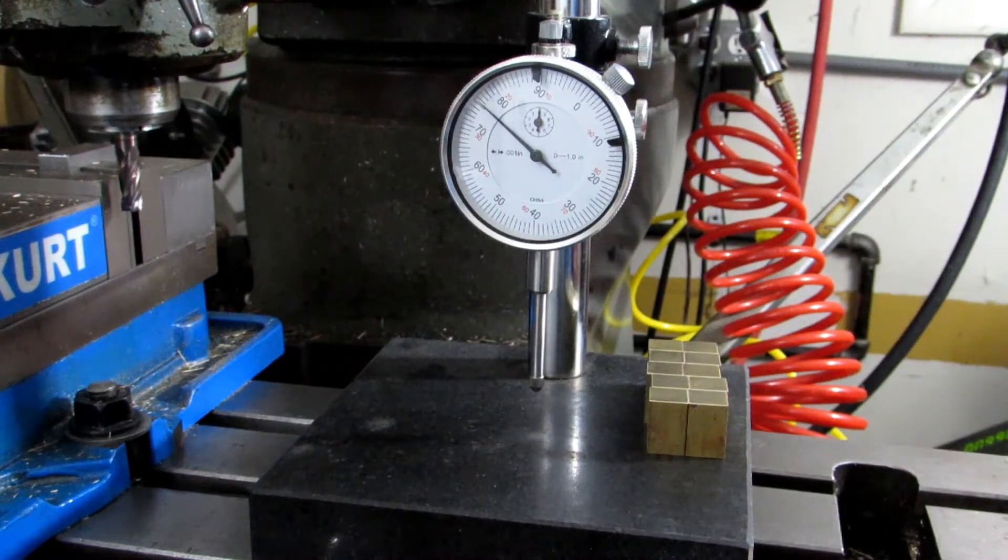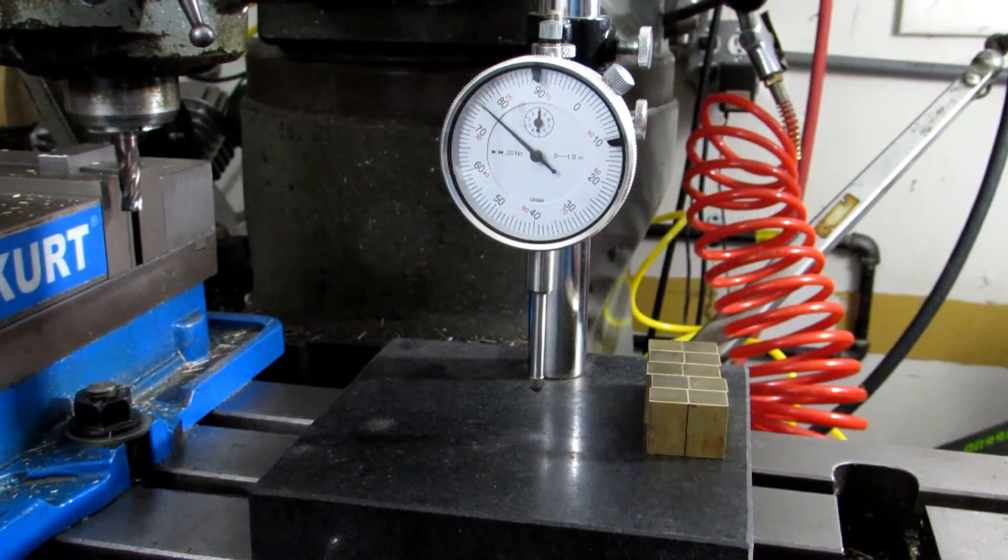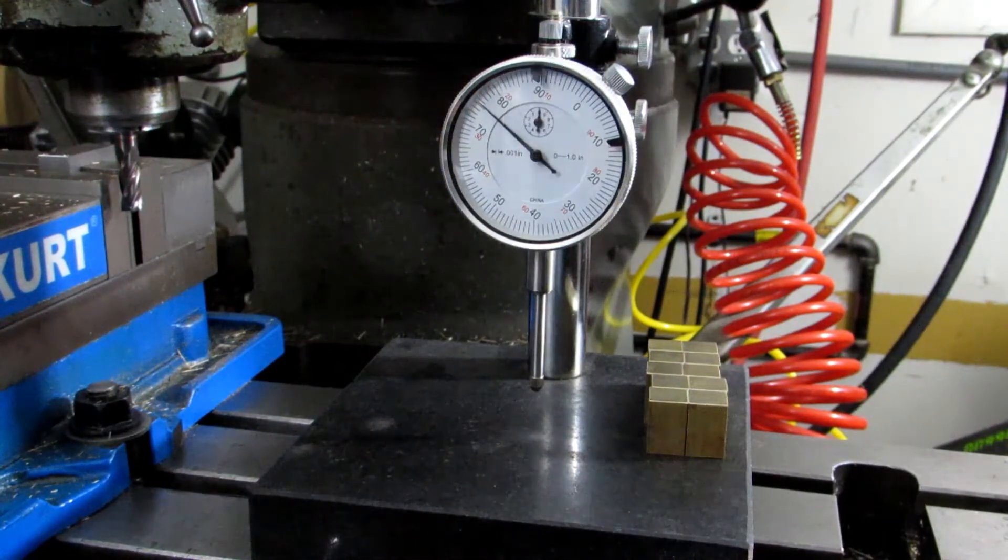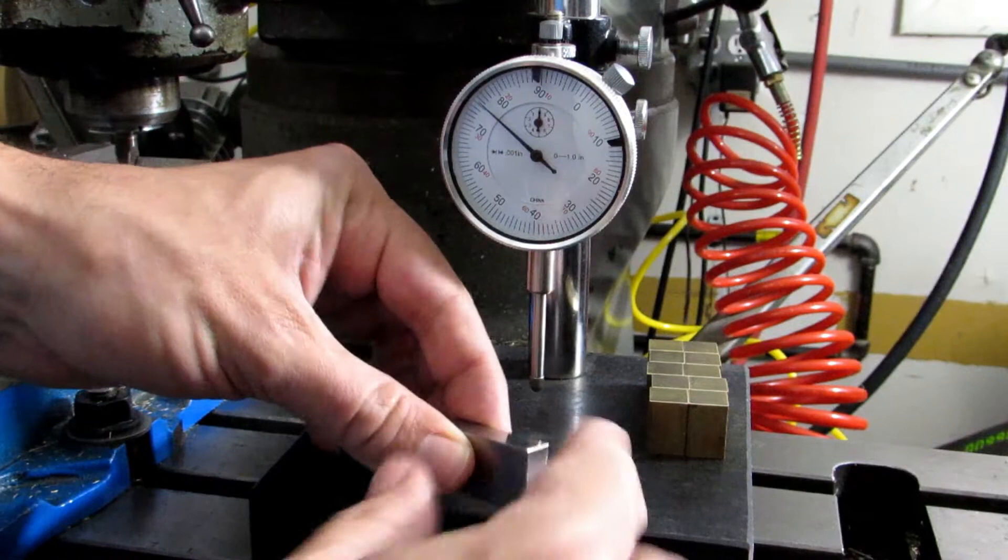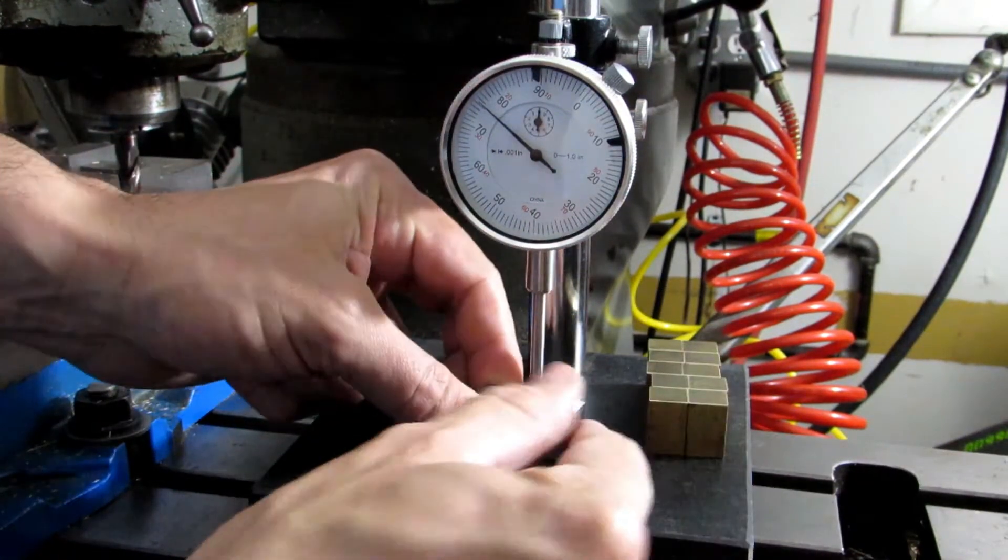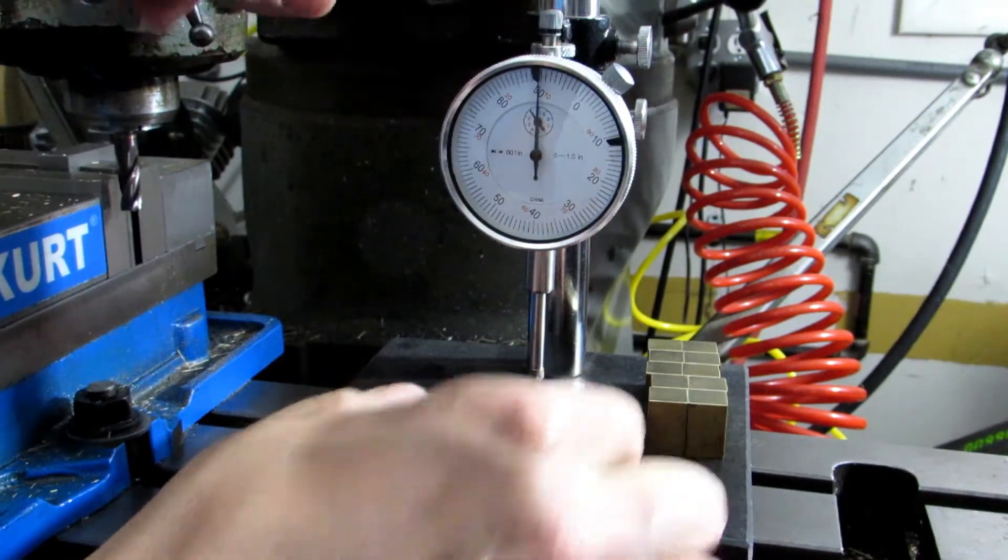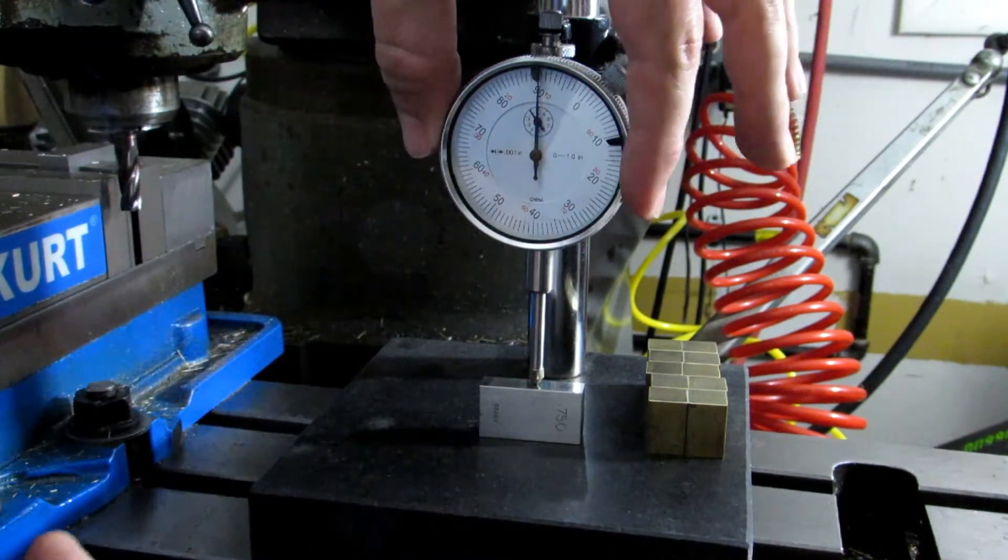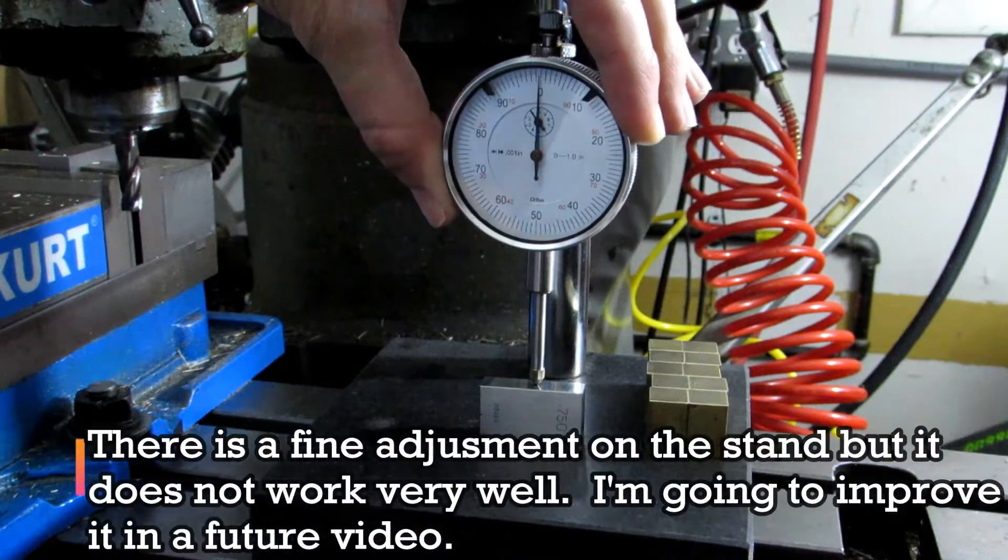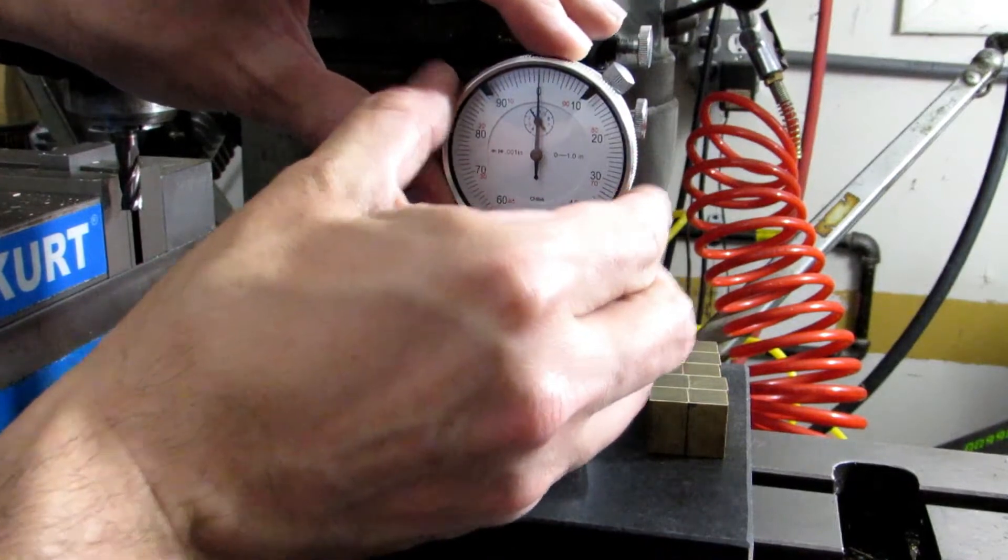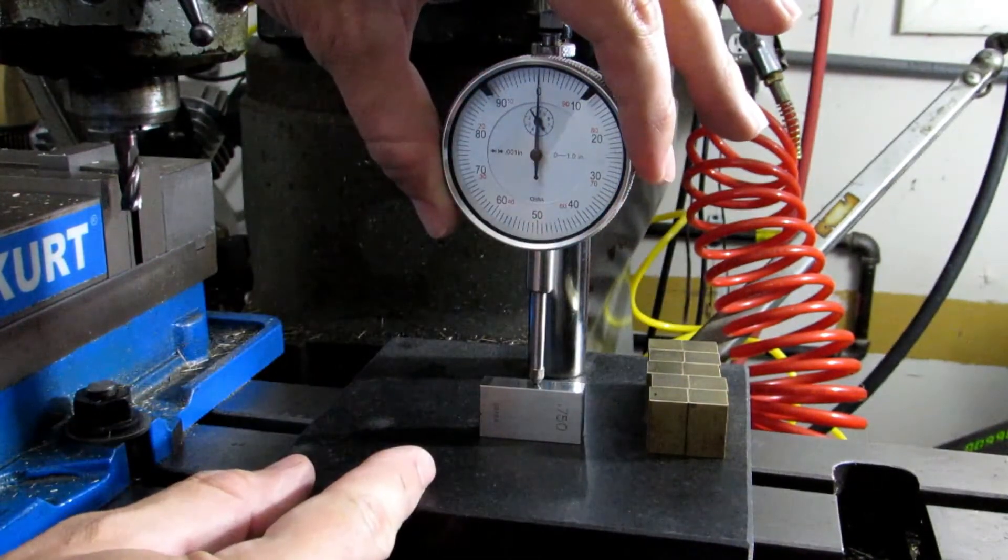You set it with a gauge block or a known good part, and you're comparing that measurement to the ones you're getting with your pieces. We can come in here, put our gauge block in place, and then you would zero your dial indicator. In this case, they're supposed to be three-quarters of an inch, and this is a three-quarter inch gauge block.